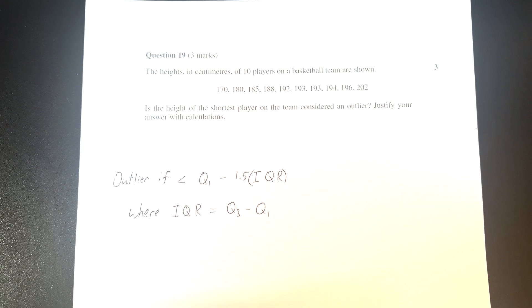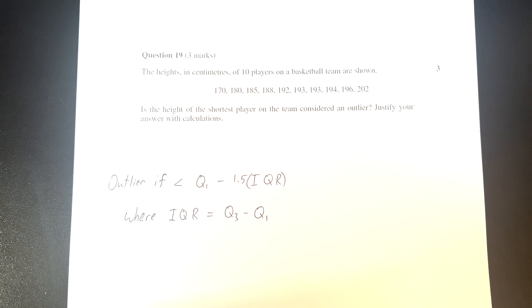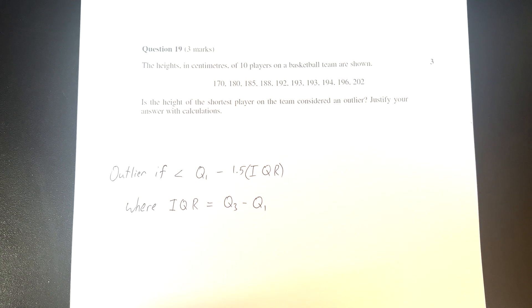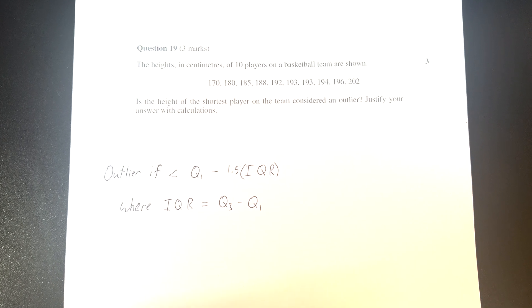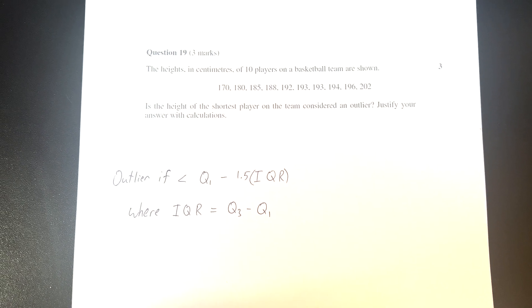We've got a question here. The heights in centimeters of 10 players on a basketball team are shown. We have those different heights from 170 up to 202. It asks us, is the height of the shortest player on the team considered an outlier? Justify your answer with calculations.